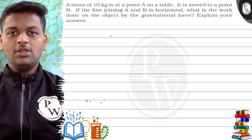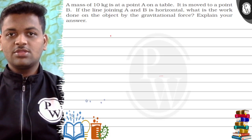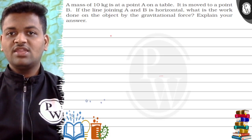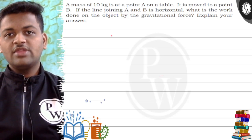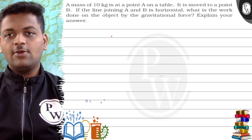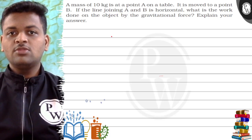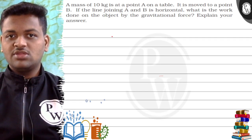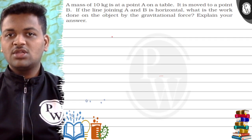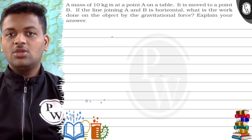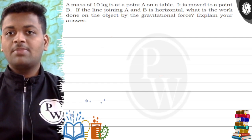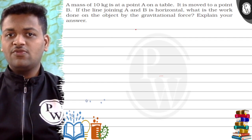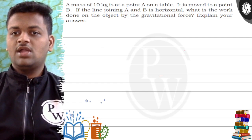Hello! Let's see this question. A mass of 10 kg is at point A on a table. It is moved to point B. If the line joining A and B is horizontal, what is the work done on the object by the gravitational force? Explain your answer.